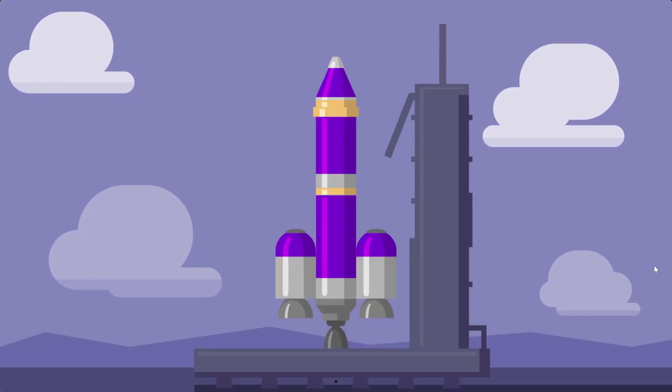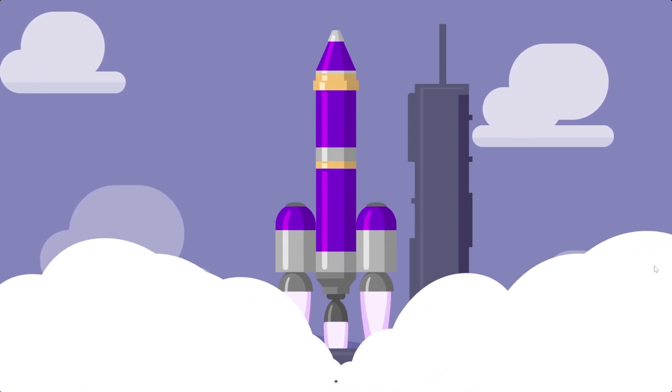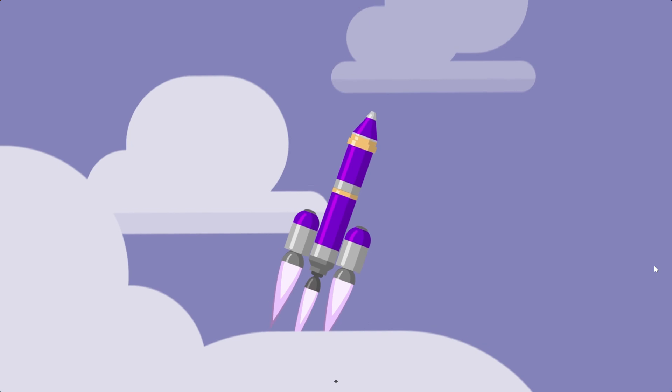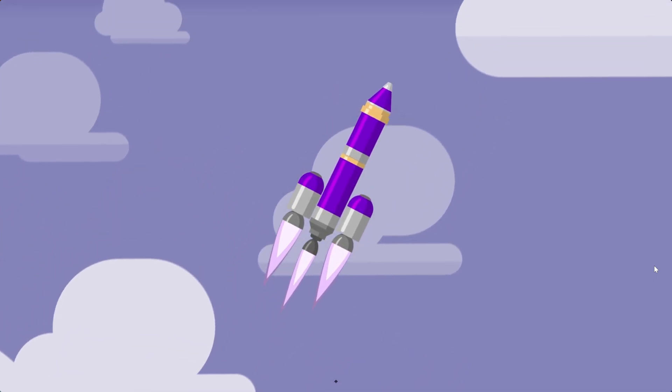By launching vertically, you cut through the thickest part of the atmosphere as quick as possible. Most orbital rockets begin tilting toward the horizon soon after they leave the launch pad.